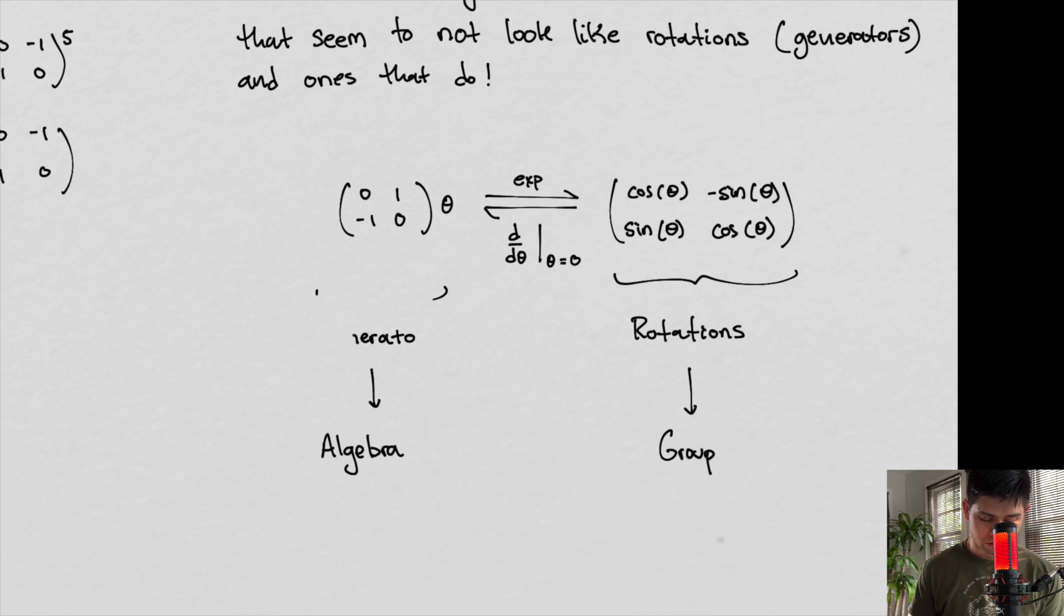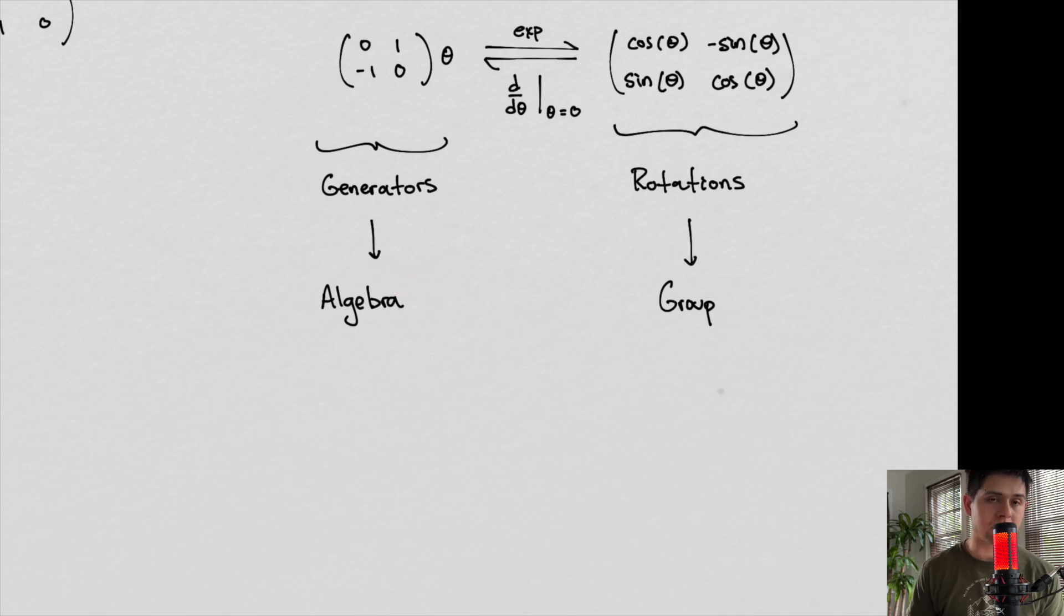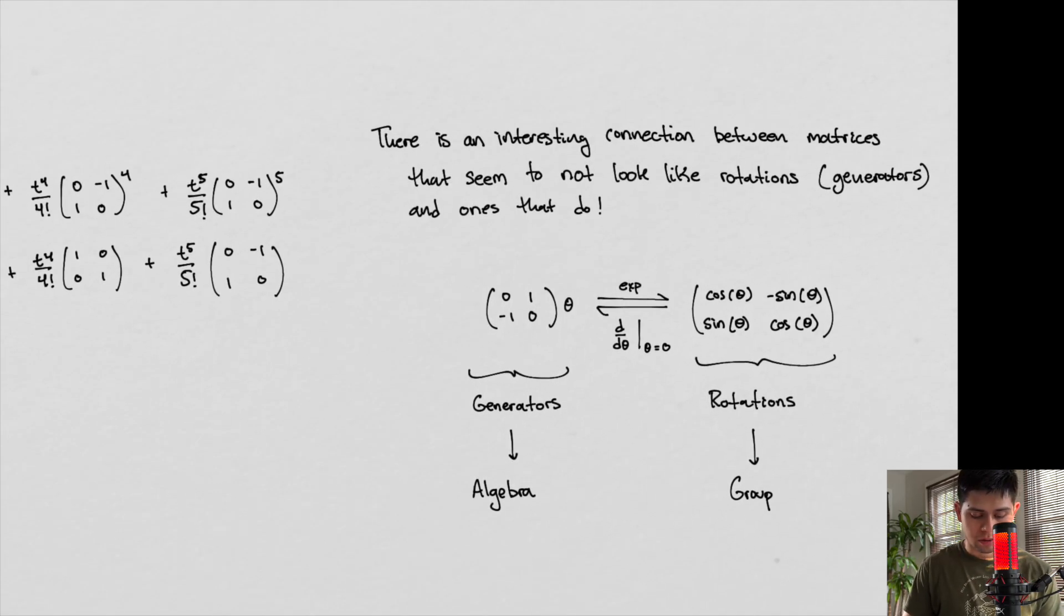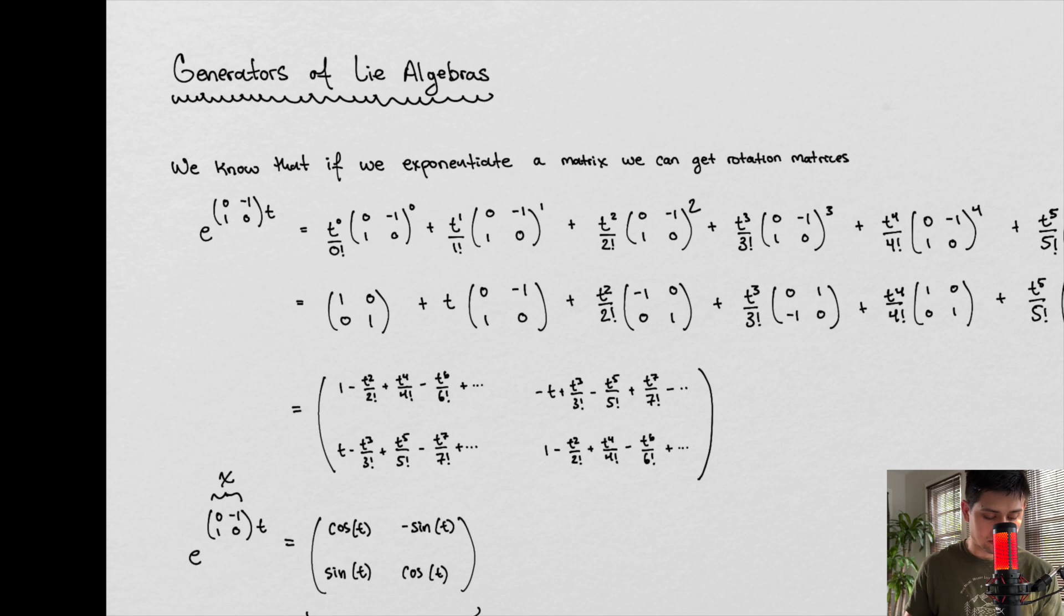Our generators are then going to construct algebras, and our groups construct groups. This is where the idea of group theory plays a big role in physics, and algebras are going to play a big role in physics as well. This is the formal definition of what it means to be a generator of Lie algebra.